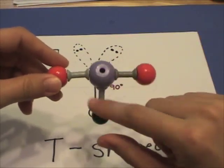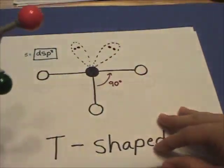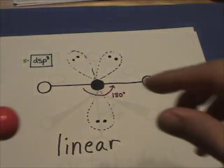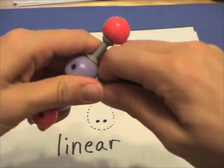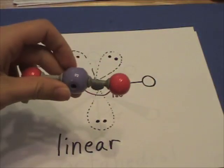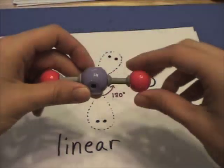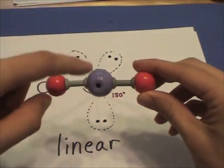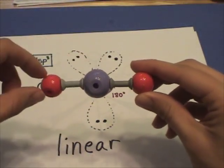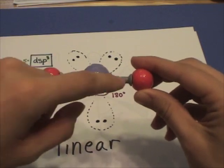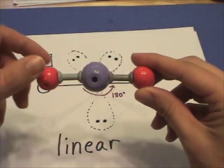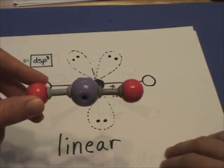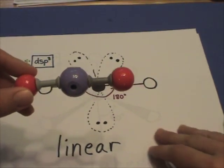With three sigma bonds and two lone pairs, it's dsp3 hybridized — five electron regions, two of which are lone pairs — giving a T-shaped molecule. With two sigma bonds and three lone pairs, the predicted angle is 180 degrees linear, dsp3.